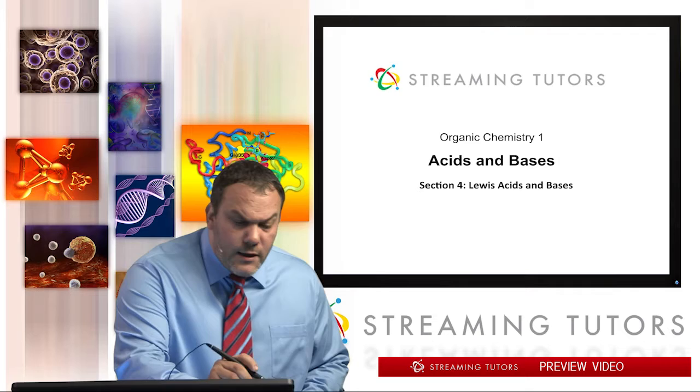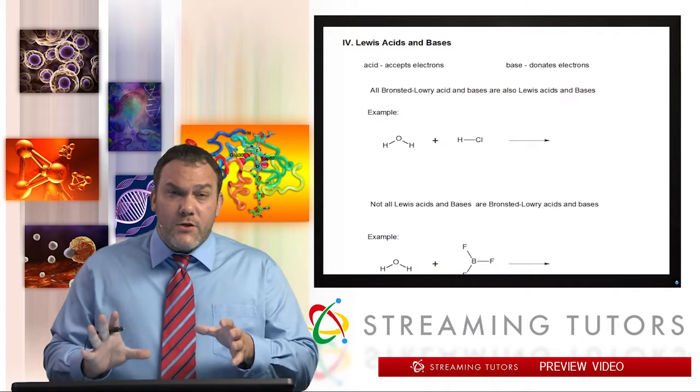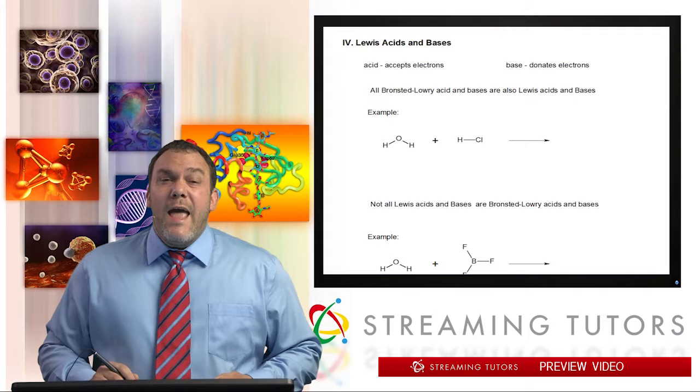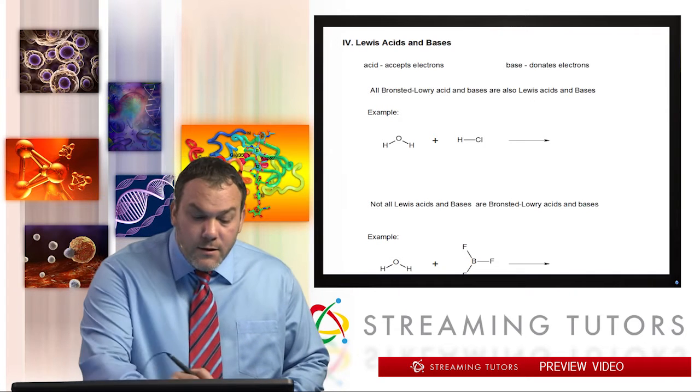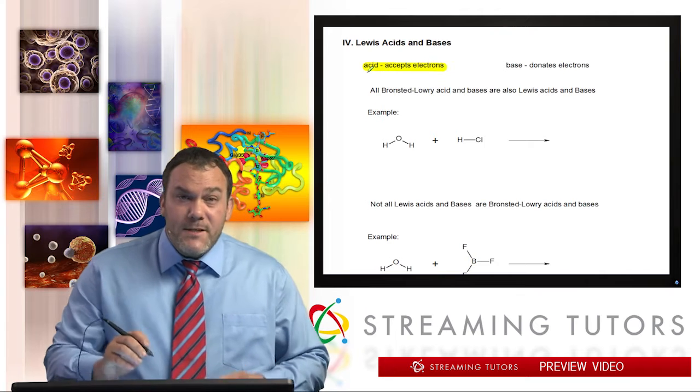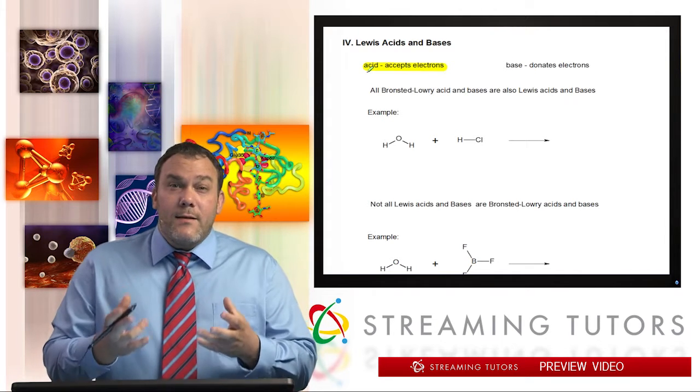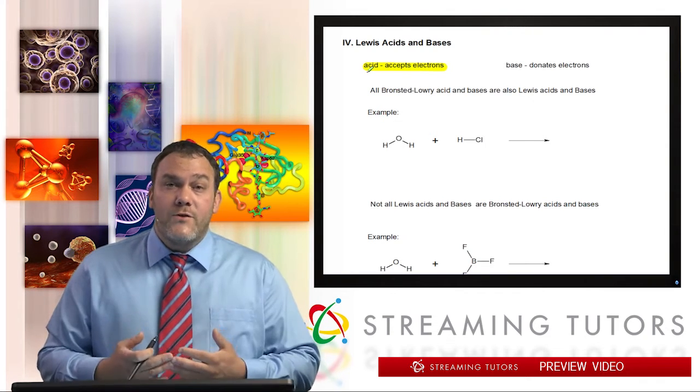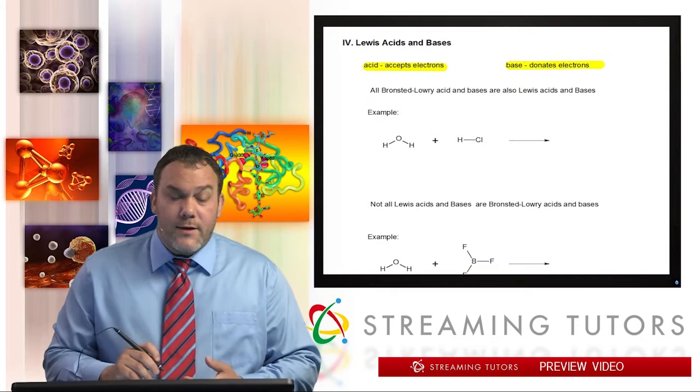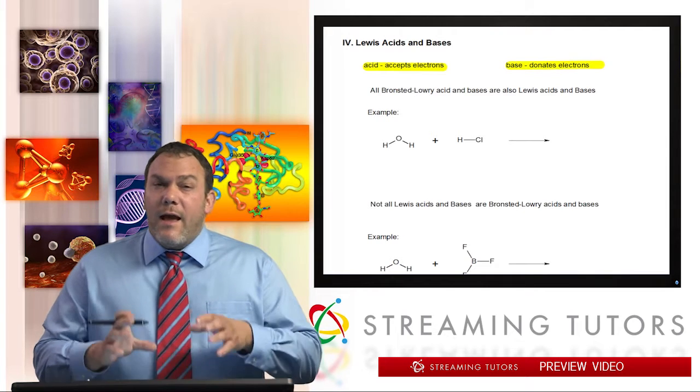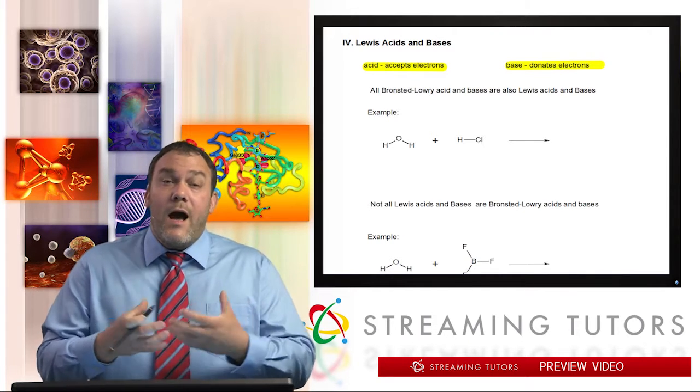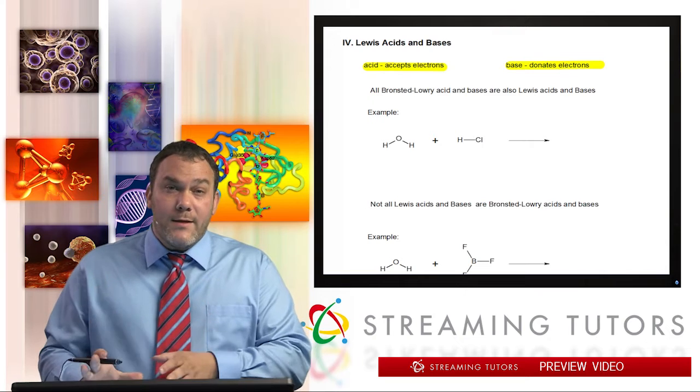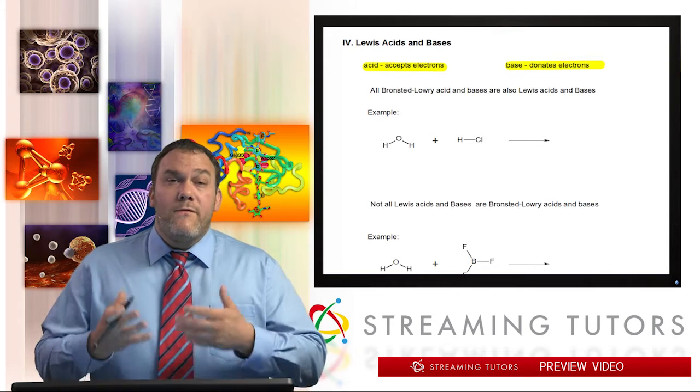The Lewis acid and base theory is all about focusing our attention on the electrons. We want to see where electrons are and where they're going. A Lewis acid is something that accepts electrons, so it's electron deficient. Whereas the Lewis base is the one that donates electrons to the acid. Remember that the Bronsted-Lowry theory and the Lewis acid theory complement each other. Whatever is considered a Bronsted-Lowry acid or base is also considered an acid or base for the Lewis definition.